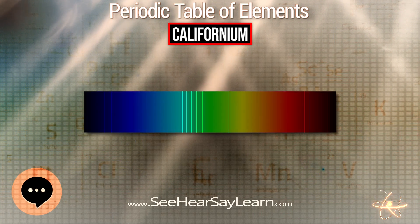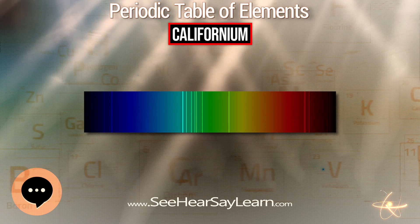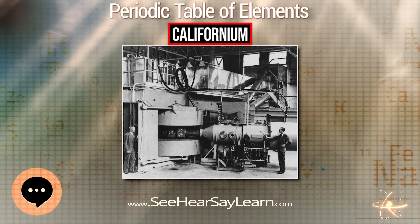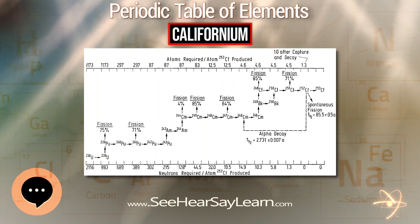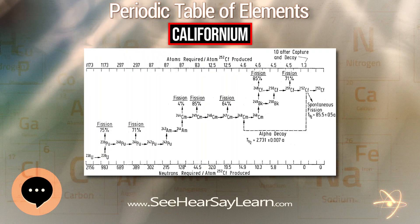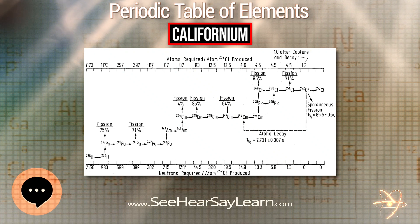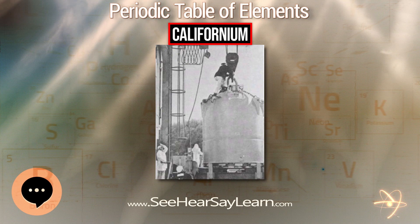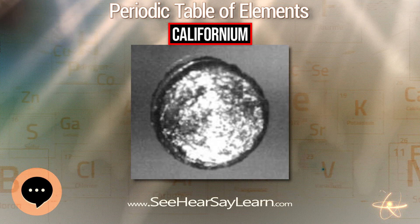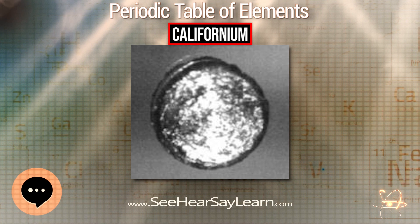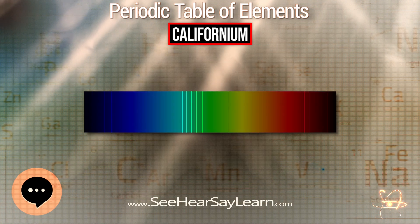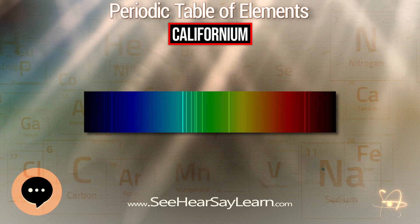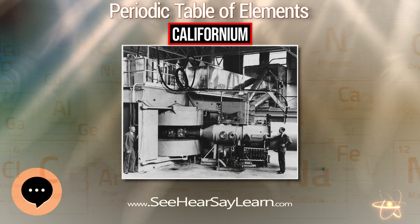Californium metal was first prepared in 1974 by reducing californium oxide with lanthanum metal to obtain microgram amounts of sub-micrometer thick films. Traces of californium can be found near facilities that use the element in mineral prospecting and medical treatments. The element is fairly insoluble in water but adheres well to ordinary soil, and concentrations of it in the soil can be 500 times higher than in the surrounding water.